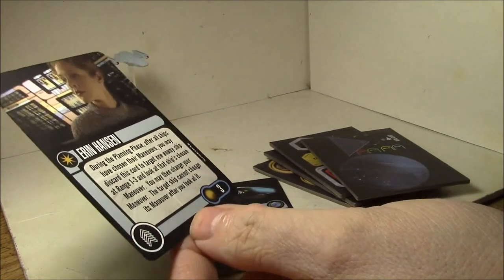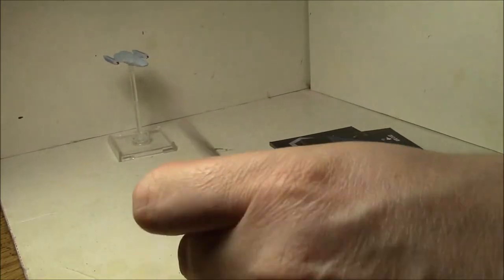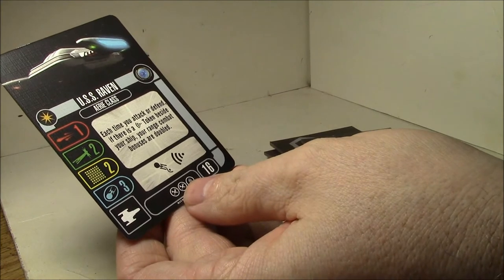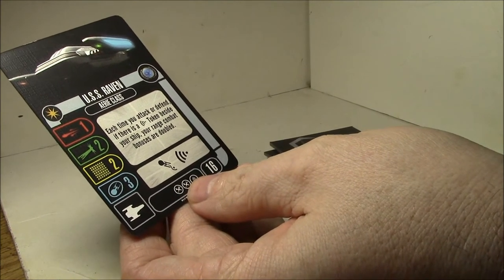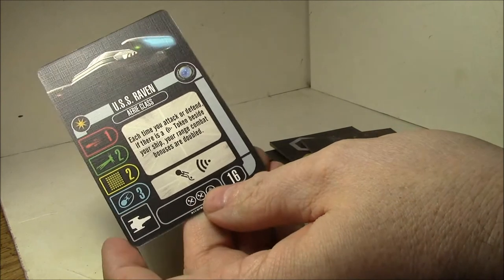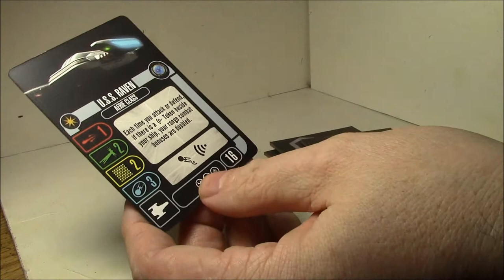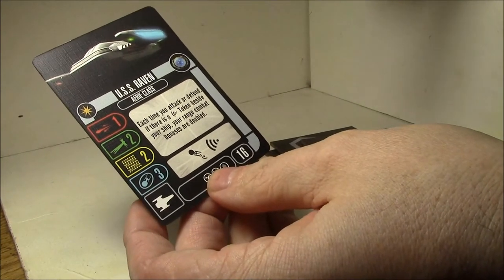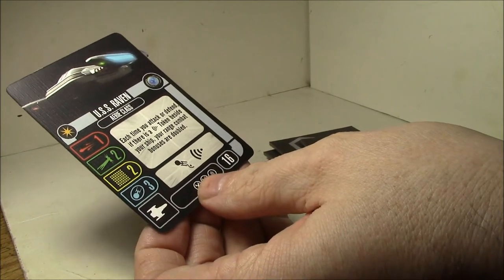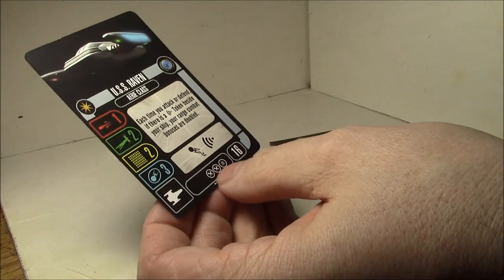USS Raven. Each time you attack or defend, if there's a scan token assigned to your ship, your range combat bonuses are doubled. So that would be the extra evade dice at range three and the extra attack dice at range one. So if you scan, you get three attack dice at range one, or you get three evades at range three, or four evades at range three. Again, 16 points, three shields, two hull, two evade, only one attack.